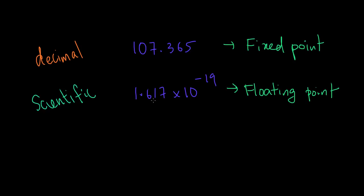This is how we use scientific representation. If we change that point, we will change the position of the point — the floating point will change the point. For example, we will consider the number 6.75.